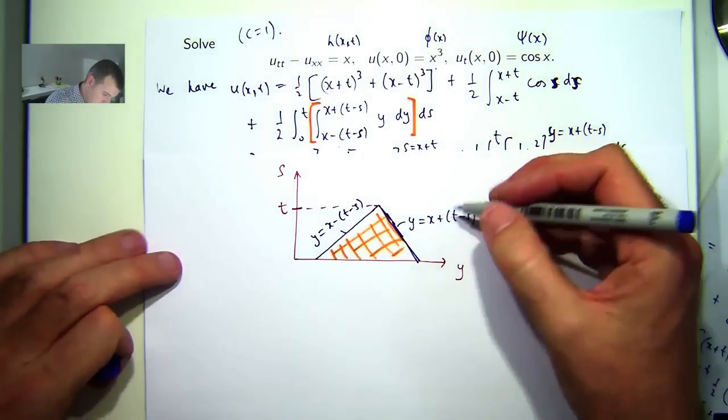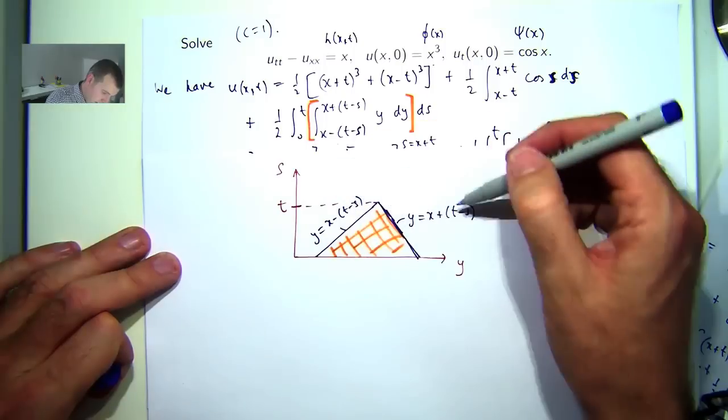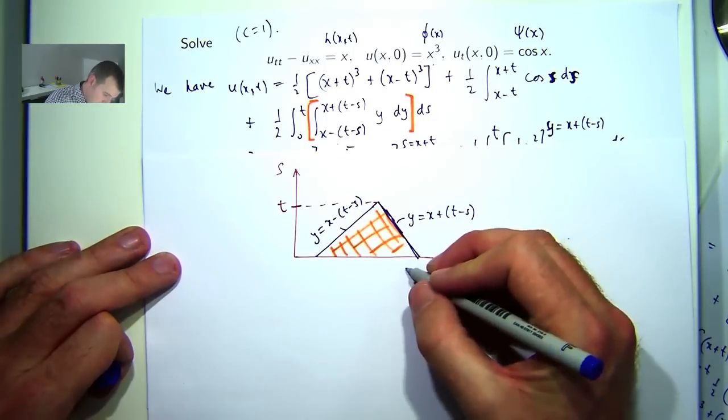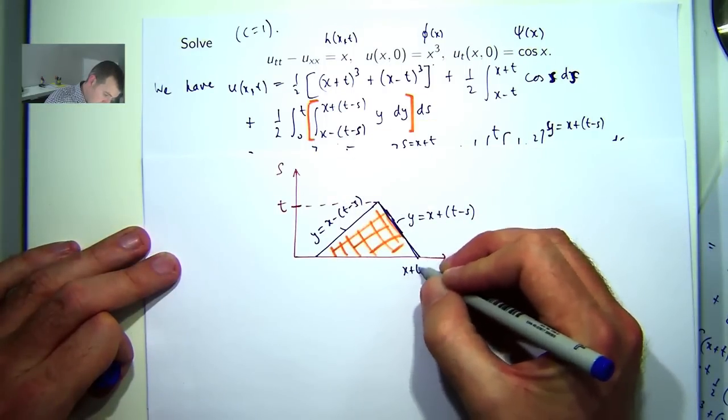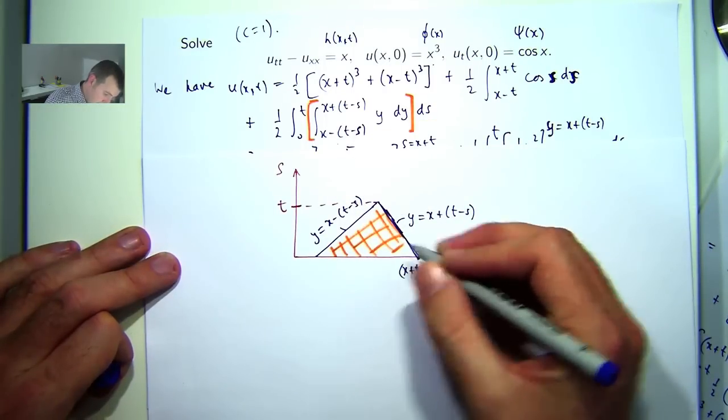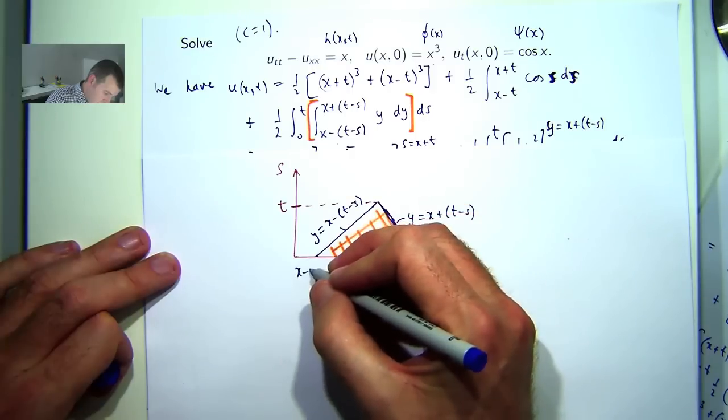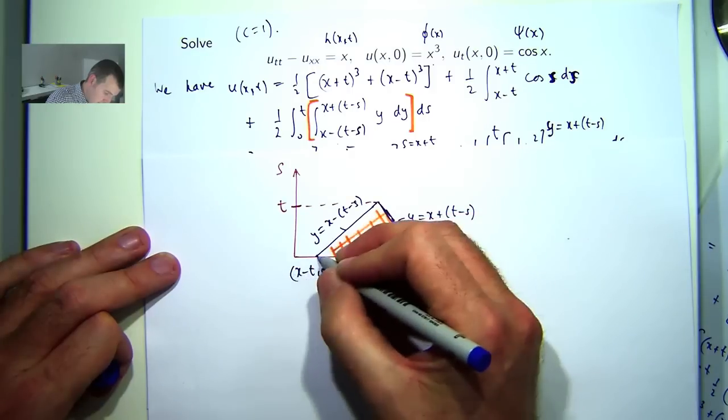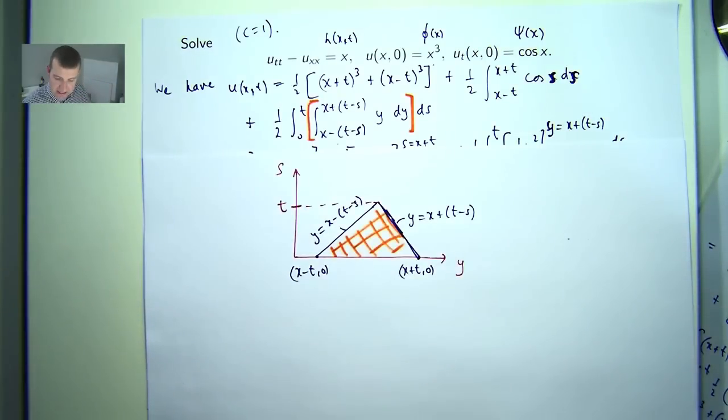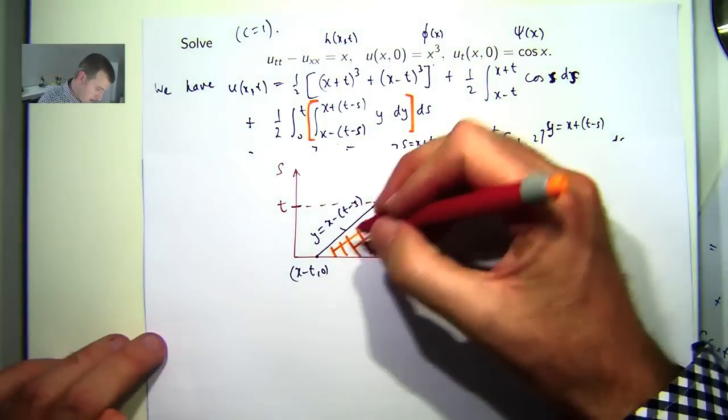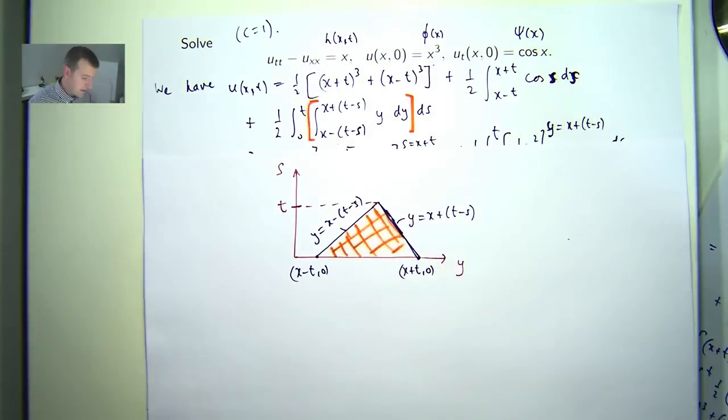And it's going to intersect the axes, for example, when s equals 0. So, this will be, say, x plus t comma 0, this point here. And this will be x minus t comma 0. Okay? So, that is the triangle that we are integrating over in this particular example. Okay?